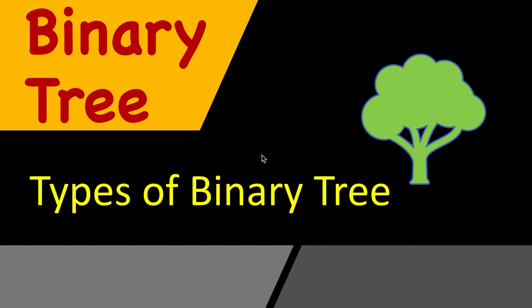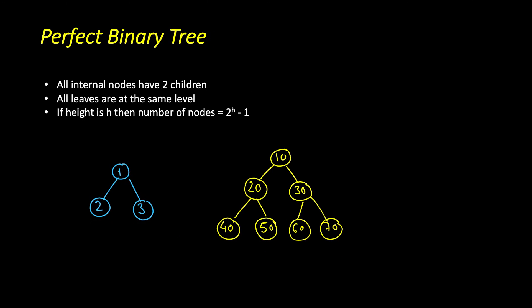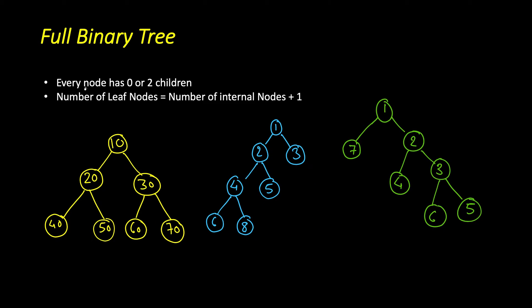In this lesson we will look at different types of binary trees. The first one is full binary tree, and all of these have similar names so that's why they are confusing. Full binary tree does not mean that it will be full and all the levels will be full — we have another name for that. Full binary tree means every node has zero or two children, not one child. For example, if you see the first tree here, we have three levels and all the levels are completely filled, so all of these nodes also have two or zero children.